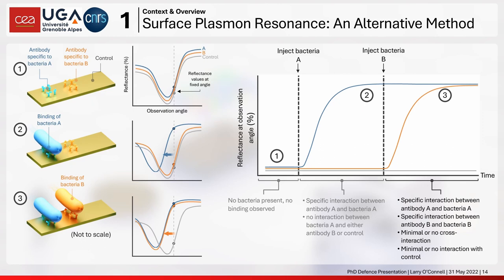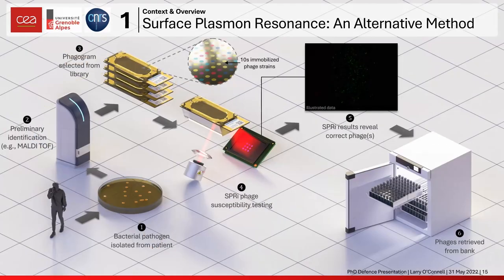If we replace antibodies with phages, the sensor response might allow us to choose which phages are effective. Instead of the previous workflow taking several hours, the idea is to replace that process with SPR. A patient presents with an antimicrobial-resistant infection, the bacterial strain is isolated, and optionally identified by multi-locus mass spectrometry. Then we select a pre-prepared, immobilized array of candidate bacteriophages likely to work against this strain.